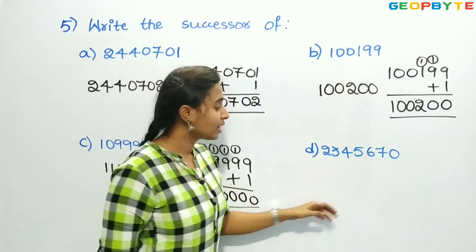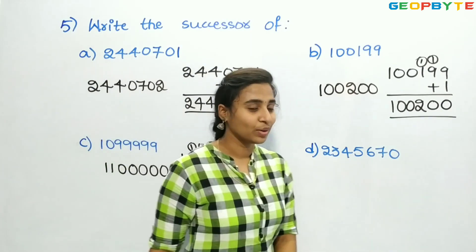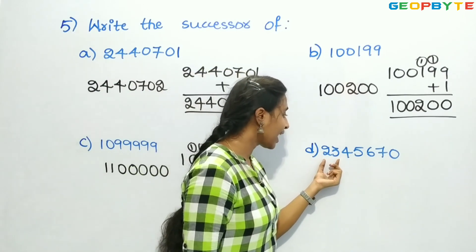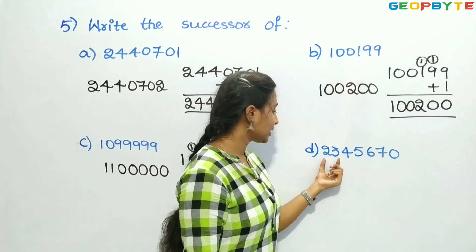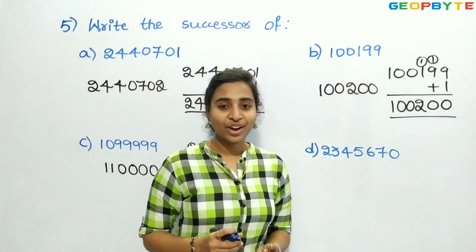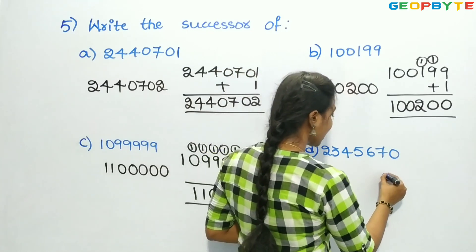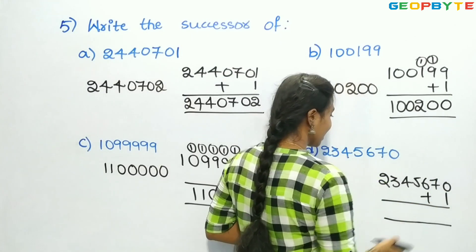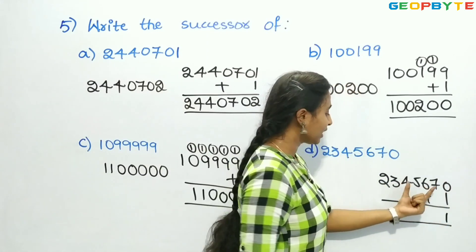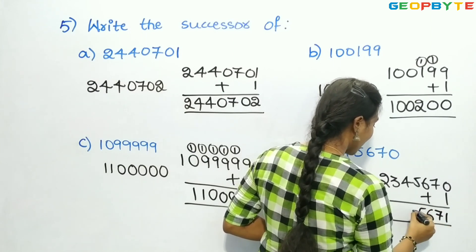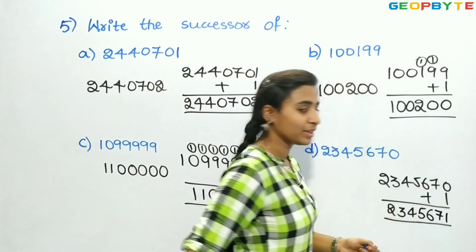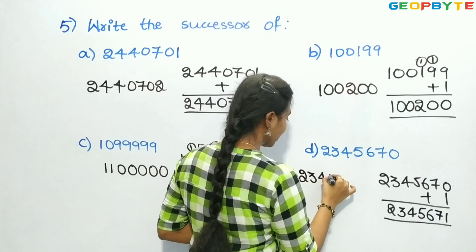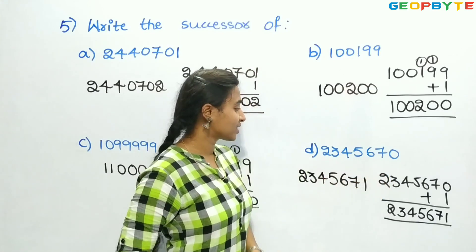Now the last number is 23,45,670. To find its successor, let us add 1: 0 plus 1 is 1, and the remaining digits — 7, 6, 5, 4, 3, 2 — stay the same. We got 23,45,671. So 23,45,671 is the successor of 23,45,670.